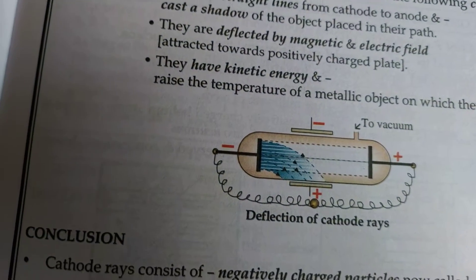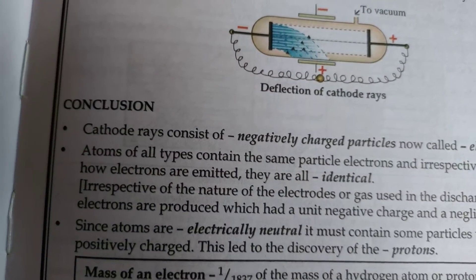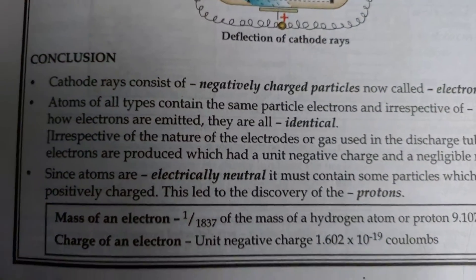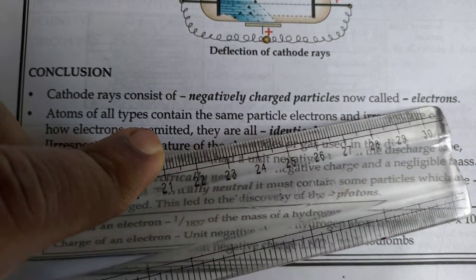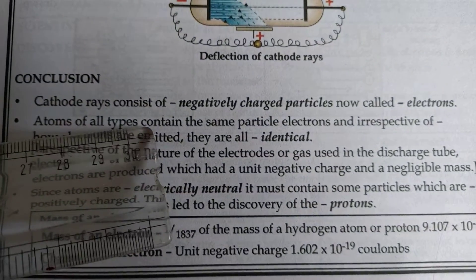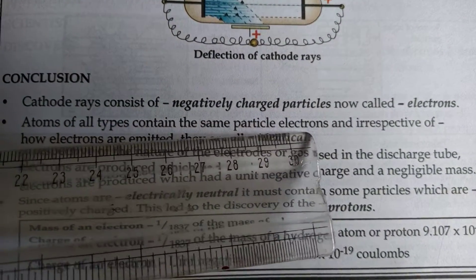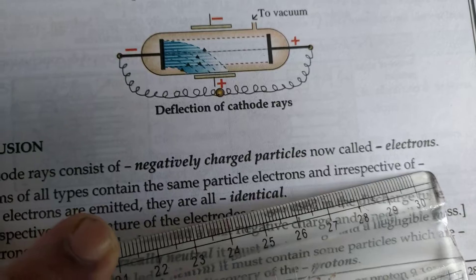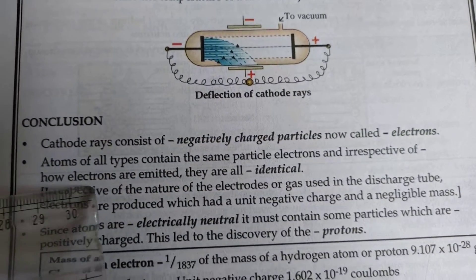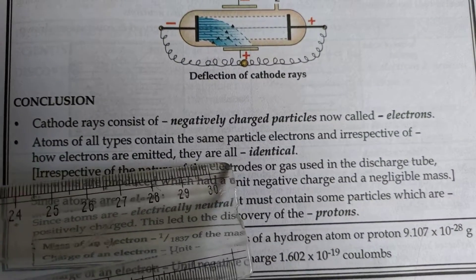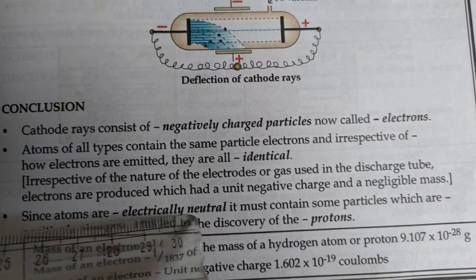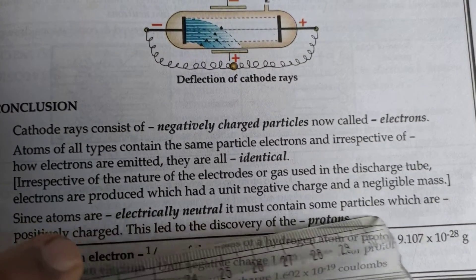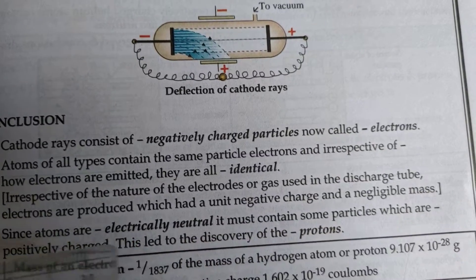With the following data and notion, the conclusion that was derived was that cathode ray consists of negatively charged particles known as electrons. Atoms of all types contain the small particles of electrons and irrespective of how electrons are emitted they are all identical. Since atoms are electrically neutral it must contain the same particles which are positively charged. This led to the discovery of proton.